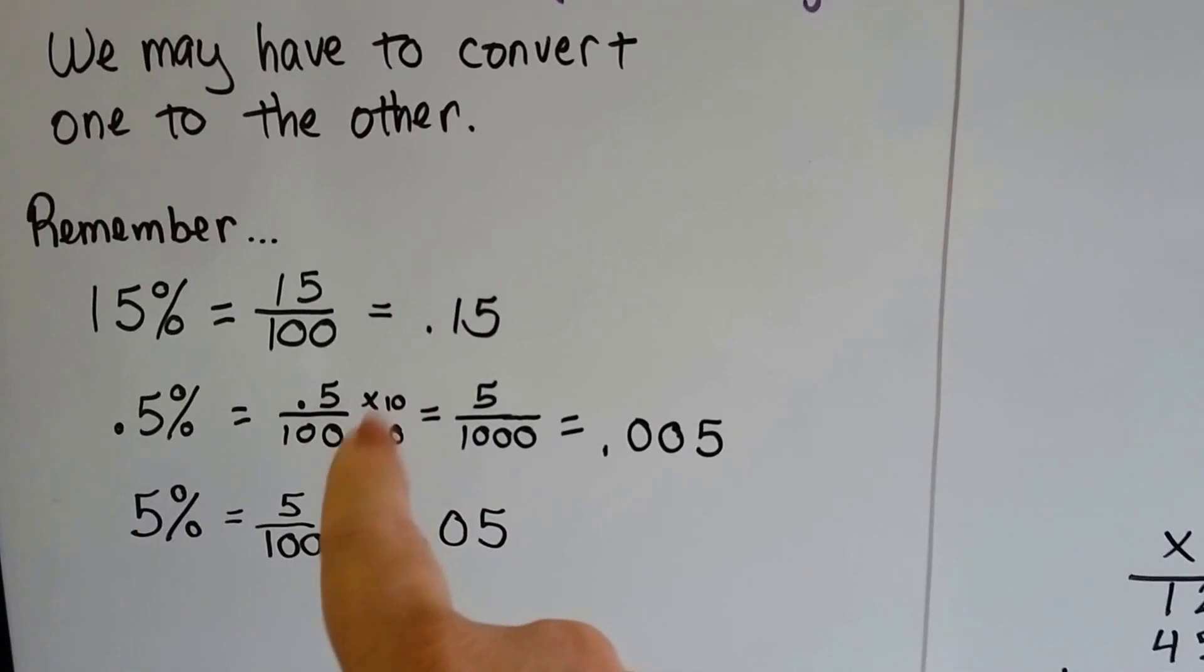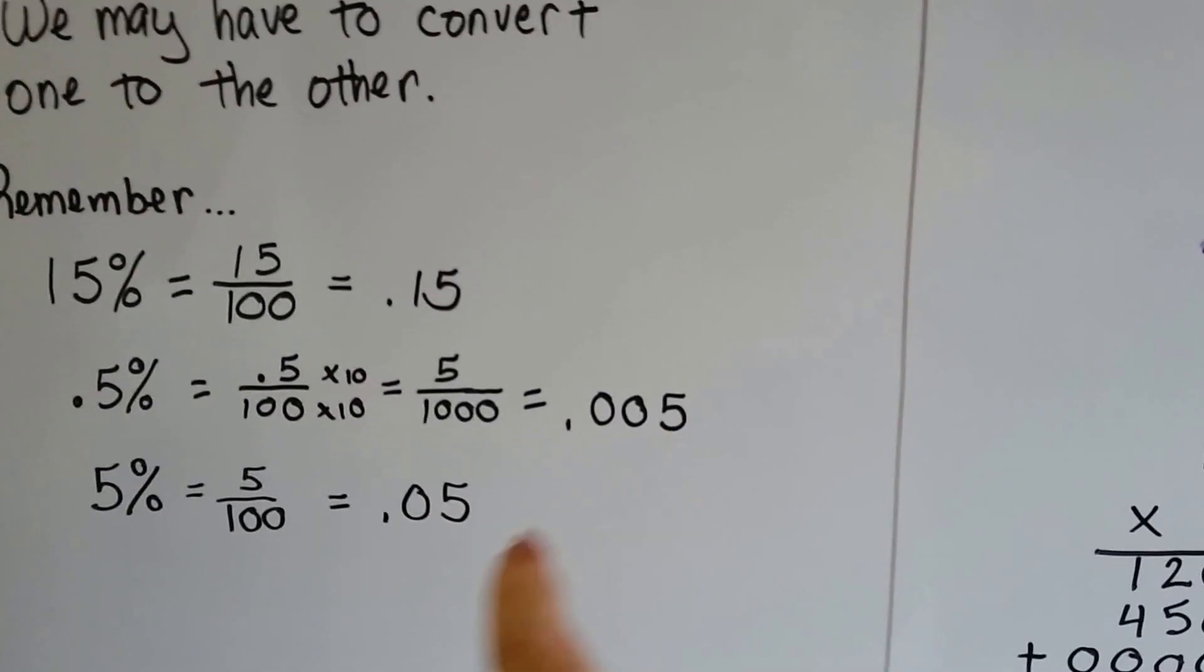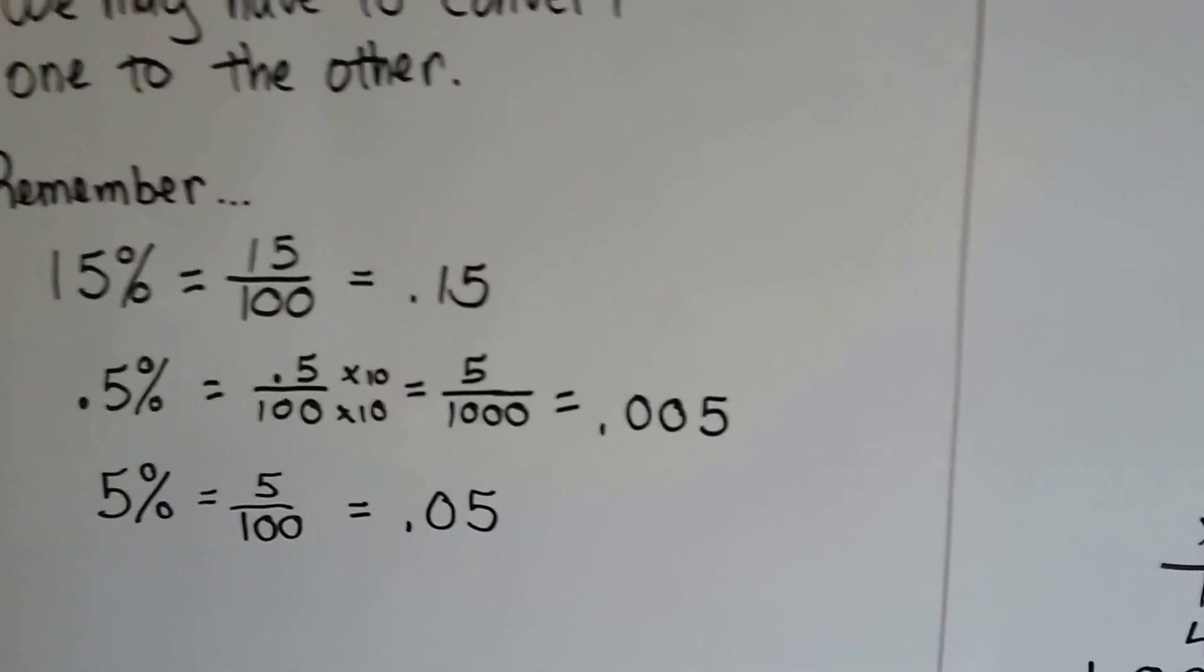We would have to multiply the numerator and denominator by 10 to get rid of that decimal point and it would come out to 0.005 as a decimal, and 5% is just 5 one-hundredths.